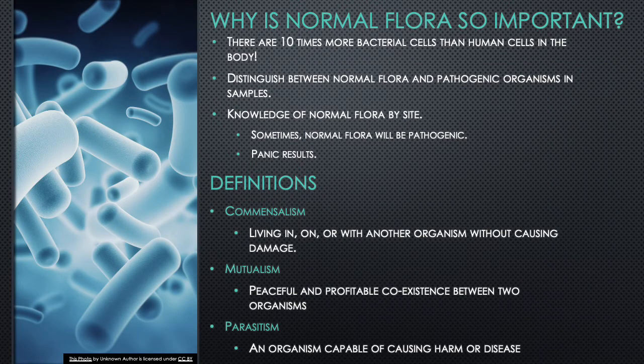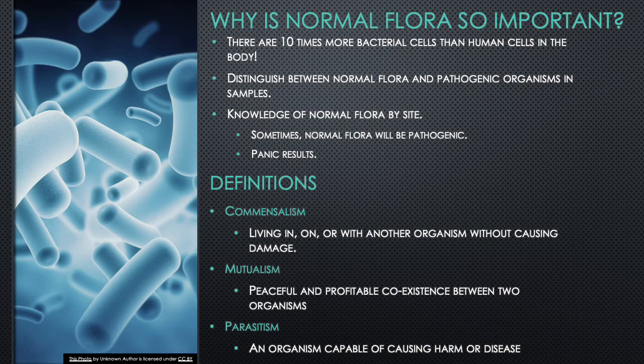First and foremost, why is normal flora so important? One of our users sent primary literature supporting that the number of bacterial to human cells in the body is closer to a one-to-one ratio rather than 10 times more. This still tells us about the abundance of microbes living in your body. Because of our close relation with them, it's important to distinguish between normal flora, pathogenic organisms, and those that may become pathogenic under certain circumstances. As clinical scientists, we need a deep understanding of the flora at each body site.